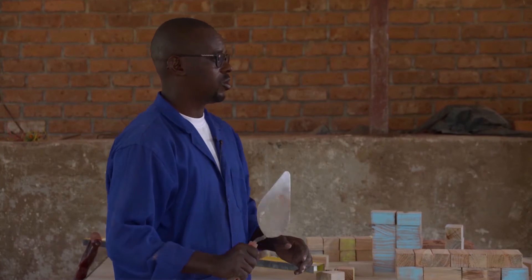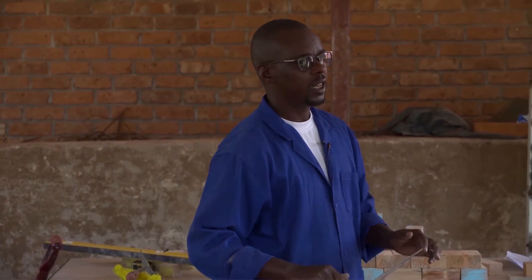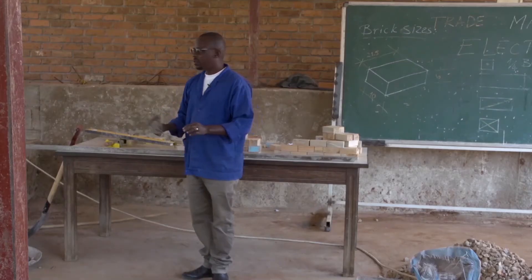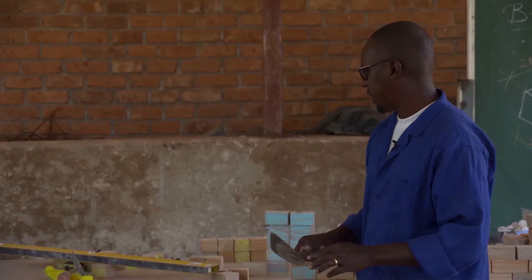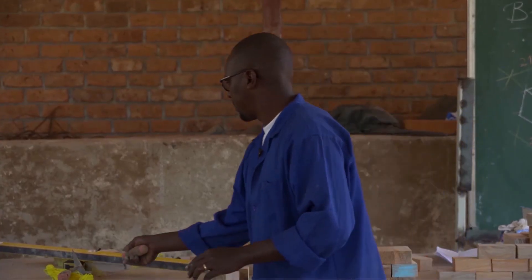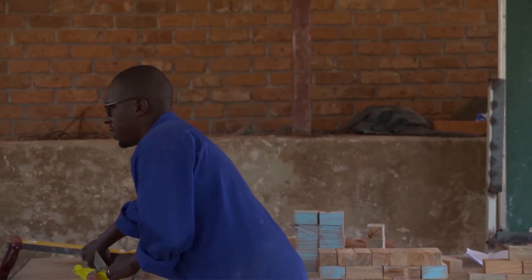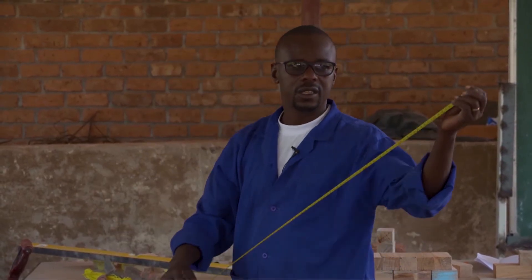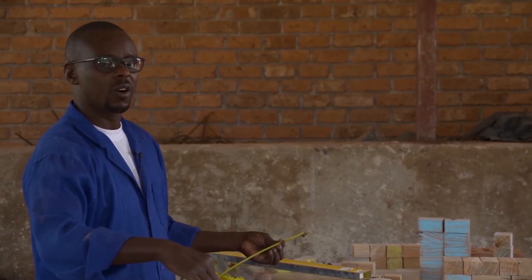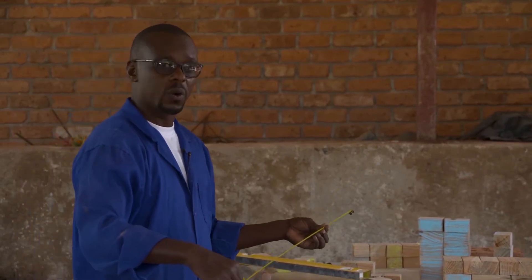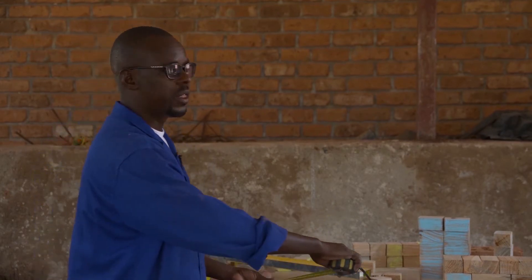The trowel can also be used for picking or removing excess mortar in joints. We have this very important tool — the tape measure — which is used to measure the length, width, and height of our masonry work.